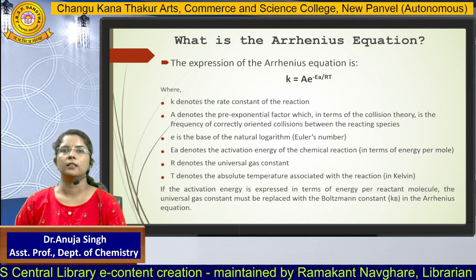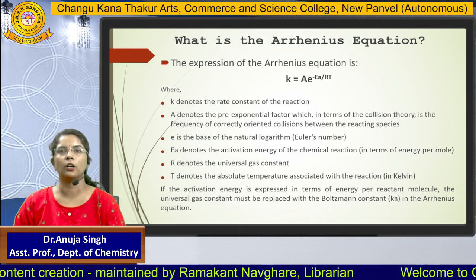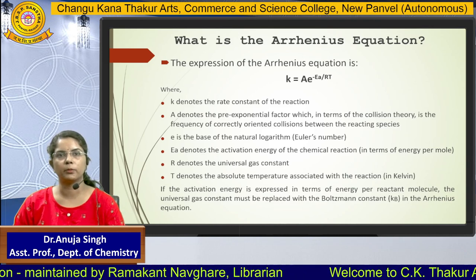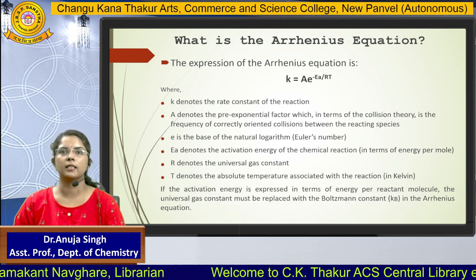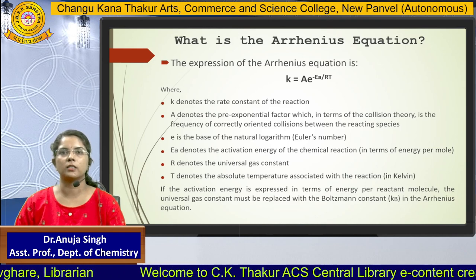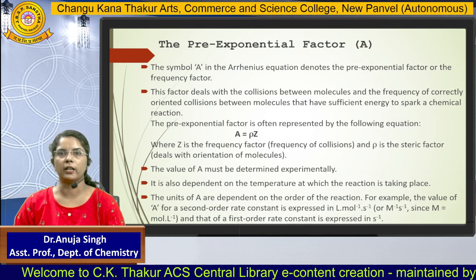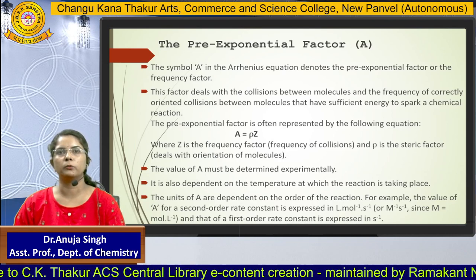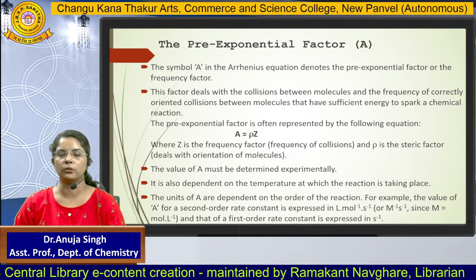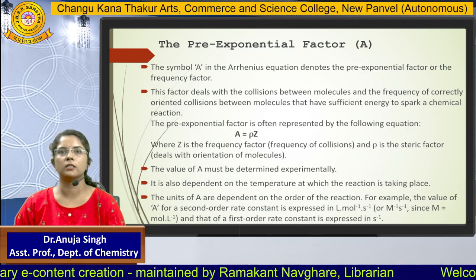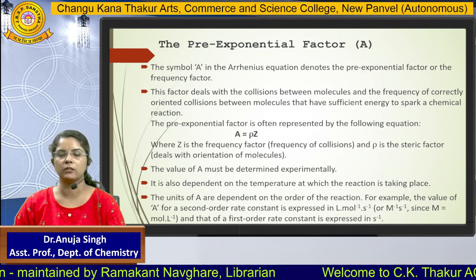The rate is directly proportional to e^(−Ea/RT). When we remove the proportional sign, we get a constant A, which is the Arrhenius constant. This constant depends on many factors and is known as the pre-exponential factor. It comprises mainly two factors: the frequency factor and the steric factor. So A = ρ · Z, where ρ is the steric factor and Z is the frequency factor.